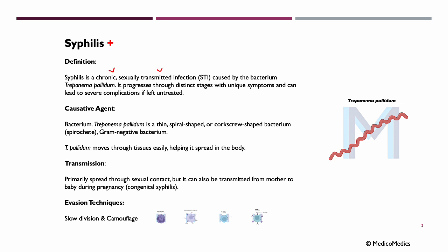Syphilis is a chronic, sexually transmitted infection, or STI, caused by the bacterium Treponema pallidum. It progresses through distinct stages with unique symptoms and can lead to very severe complications if left untreated. The causative agent, Treponema pallidum, is a thin, spiral-shaped or corkscrew-shaped bacterium, also known as a spirochete, and it is gram-negative.